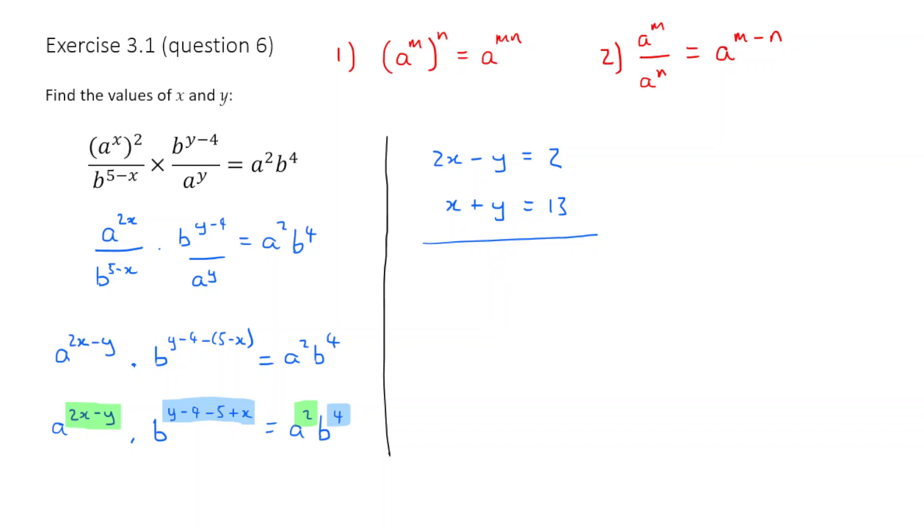What I'm going to do here is I'm just going to add those up. And the reason I'm going to do that is because it's going to cancel off the y's. So 2x plus x is 3x. But minus y plus y is 0y. So that's going to equal to 15. And therefore, x is equal to 5.